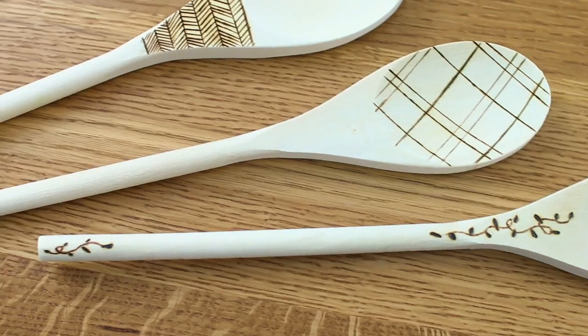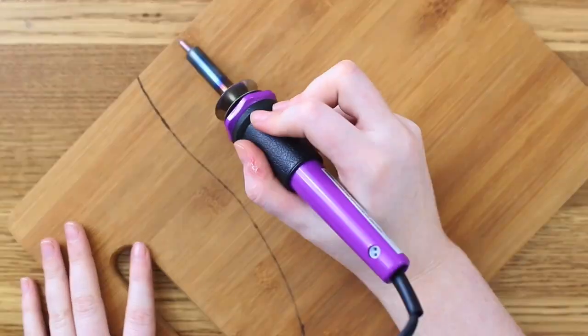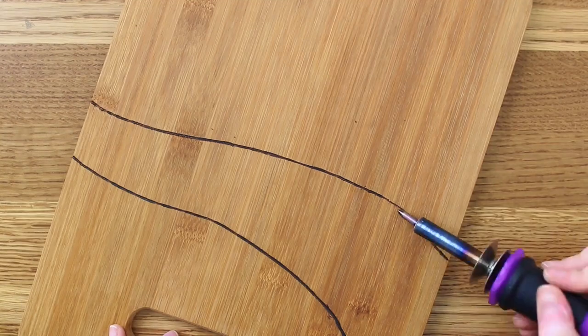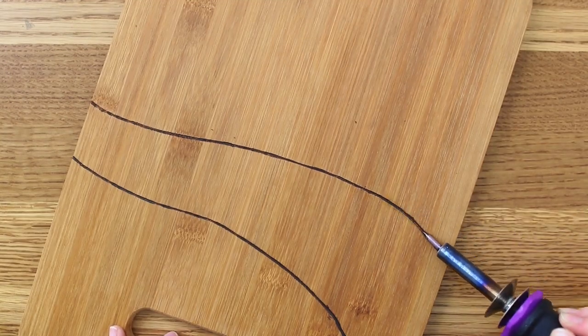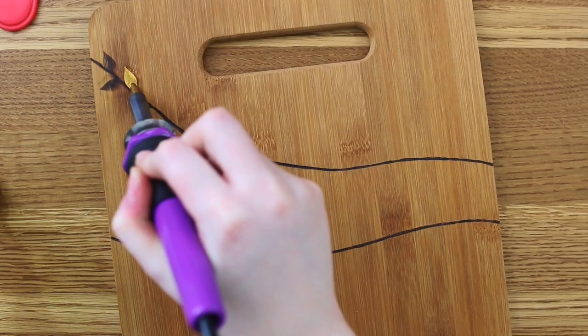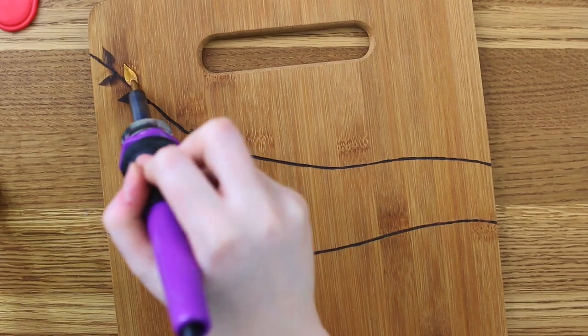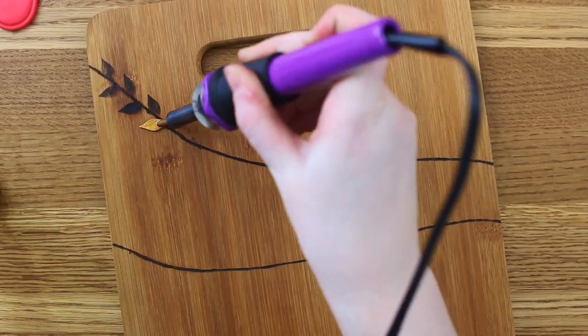But my absolute favorite one is this cutting board. I saw something like this on Pinterest so I wanted to try it out. I got this bamboo cutting board at Walmart and then I just picked up this nib, which is first of all my favorite one. This is the easiest one to do. You just hold it flat for as long as you want.